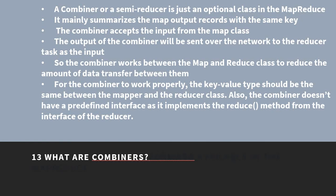What are combiners? A combiner, also called a semi-reducer, is an optional class in MapReduce. It mainly summarizes the map output records with the same key. The combiner accepts the input from the Map class, and its output is sent over the network to the reducer task as input. The combiner works between the Map and Reduce class to reduce the amount of data transfer between them. For the combiner to work properly, the key-value type should be the same between the mapper and reducer class. The combiner doesn't have a predefined interface — it implements the reduce method from the reducer interface.